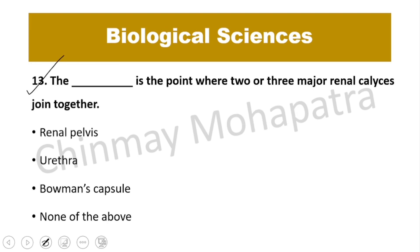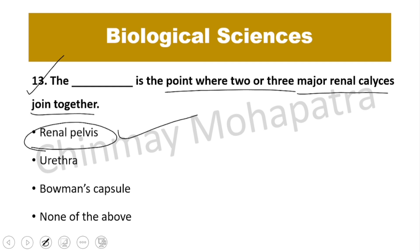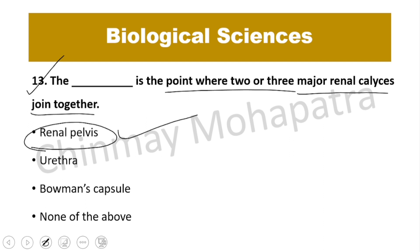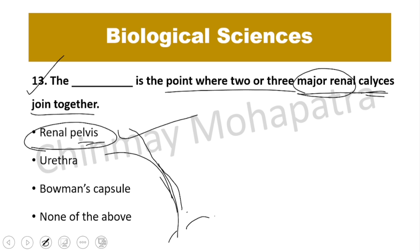Question number 13: The point where 2 or 3 major renal calyces join together is the renal-pelvic region, which is a wider part of the cornet-like structure. The major calyces join in the renal pelvis, and urine is collected by the renal-pelvic region.